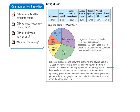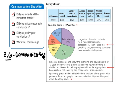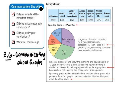We're looking at Chapter 3, Lesson 3.6, which is communicating about graphs. This section is about looking at graphs and seeing whether or not they adhere to the communication checklist. Let's review the checklist: Did you include all the important details? Did you use the right type of graph — the correct type of graph for the data?